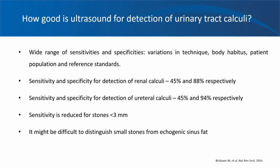A pooled review of the literature demonstrates a sensitivity and specificity of 45% and 88% respectively for the detection of kidney stones, and sensitivity and specificity of 45% and 94% respectively for detection of ureteral stones. Sensitivity is reduced for stones less than 3 millimeters, and stones can also be missed in a decompressed pelvicalyceal system because it becomes difficult to distinguish echogenic sinus fat from stones. Beginners can easily confuse lumpy, bumpy sinus fat with stones.